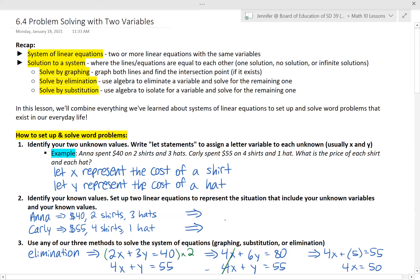So if Anna got two shirts and we know that x now represents the cost of her shirt, how much did she spend in total on shirts? Two x. She bought two and the price is x. For hats she bought three of them and the price of a hat is y, and in total she spent $40. So that would be the equation that we write for Anna's situation.